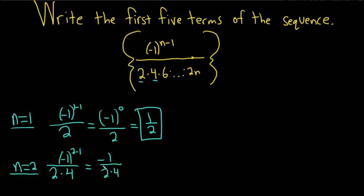I'm going to leave it like this because it's more descriptive. You could multiply it out and write negative 1 eighth, but I'll leave it like this so you can see the pattern.